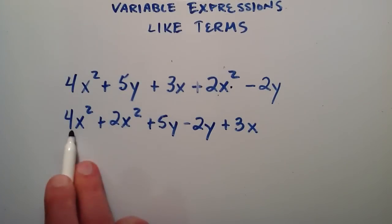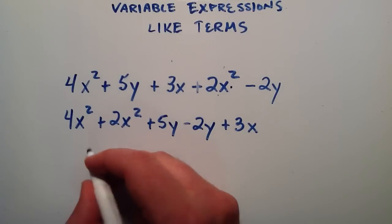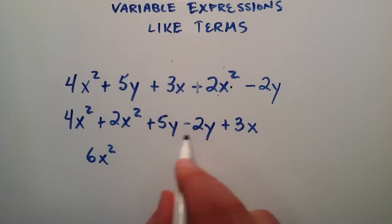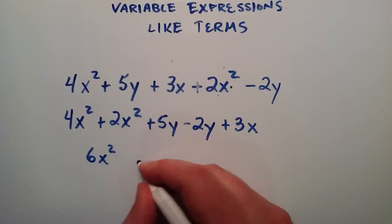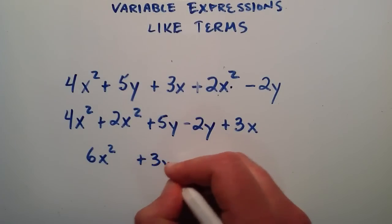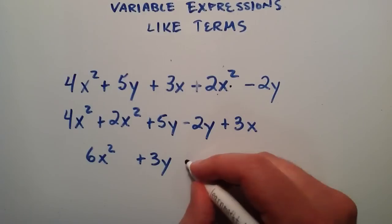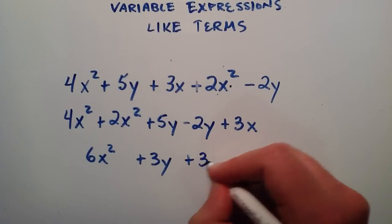So now we have like terms here. We're going to add them together. 4 plus 2 is equal to 6, and then we just write the x squared afterwards. And then combining these two like terms together, 5 minus 2 is equal to 3. So we have 3y's. And then there's no like terms for the x, so we simply write that just how it is.